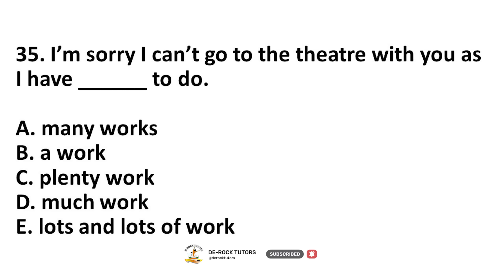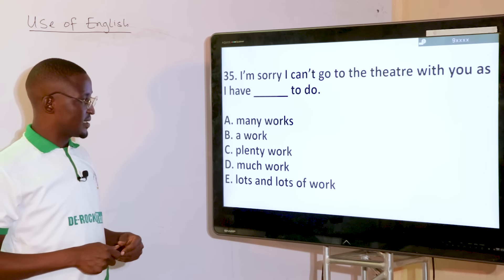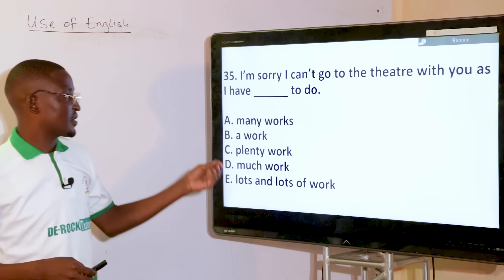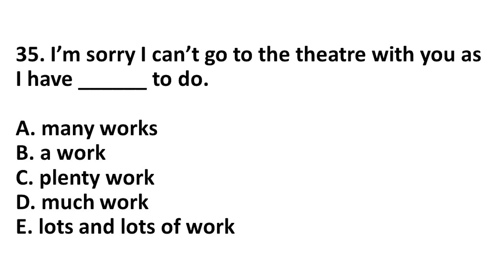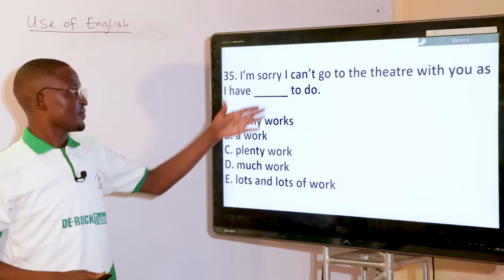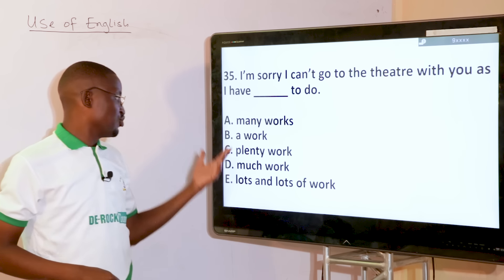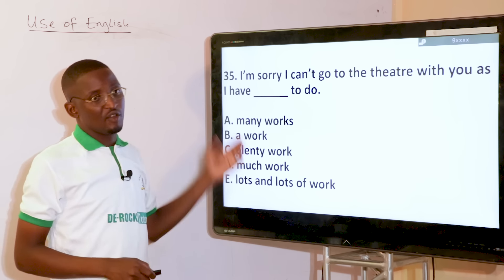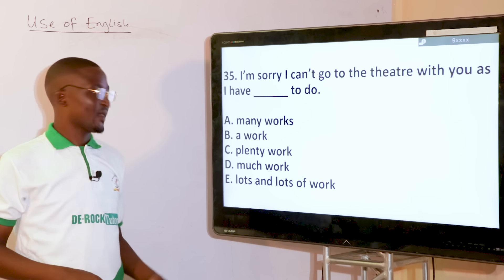I'm sorry I can't go to the theater with you, as I have dash to do. This is still about plural uncountable words. Work, when referring to tasks you do, cannot be pluralized — the plural form of work is still work, you don't add S. For uncountable plural words, use much rather than other quantifiers. The answer is: I'm sorry I can't go to the theater with you, as I have much work to do — option D.